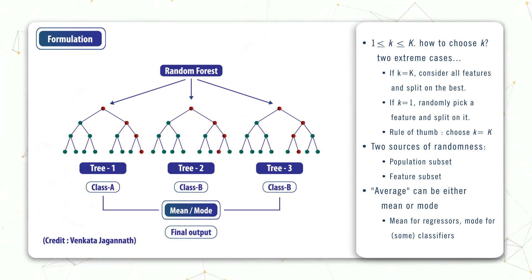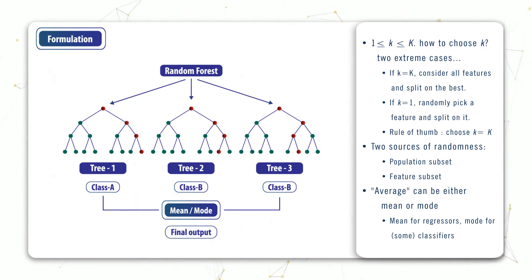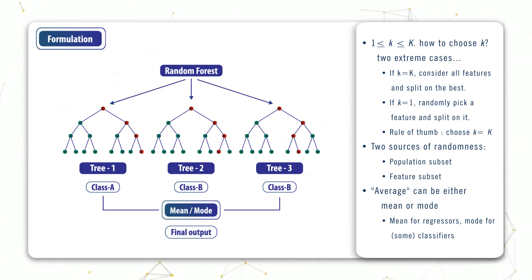For example, in Python's scikit-learn library it automatically uses the mean by default, even for classifiers. To broadly summarize random forests: we first create random subsets of the dataset, then independently build a tree on each subset using only a fraction of the total available features, and then we average over all their outputs. That's our random forest prediction.